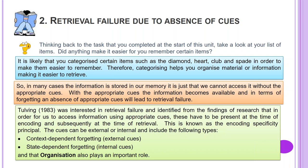Tulving in 1983 was interested in retrieval failure and identified from research findings that in order to access information using appropriate cues, those cues have to be present at the time of encoding and subsequently at the time of retrieval. This is known as the encoding specificity principle. The cues can be external or internal and include context dependent forgetting (external cues), state dependent forgetting (internal cues), and organisation, which also plays an important role.